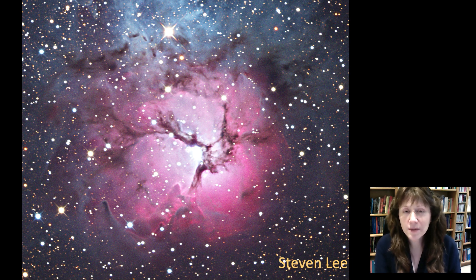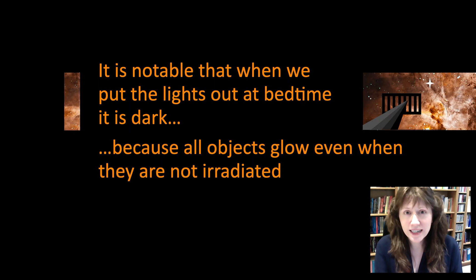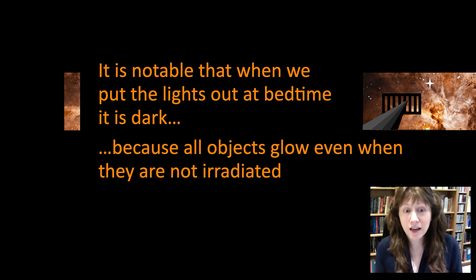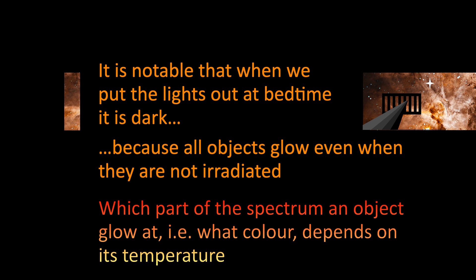Now let's talk about something a bit more everyday and closer to home. When we put the lights out at bedtime tonight, we expect the room will go dark. And as far as our human eyes are concerned, it is dark, it will be dark, at least as far as the visible spectrum to which our eyes are sensitive is concerned. But actually, it should be remarkable that it's dark as far as our human eyes are concerned. And that's because all objects glow even when they are not irradiated. The colour or the wave band at which they radiate depends critically on the temperature of the object. Which part of the spectrum an object glows at, i.e. what colour it is, depends very much on its temperature.